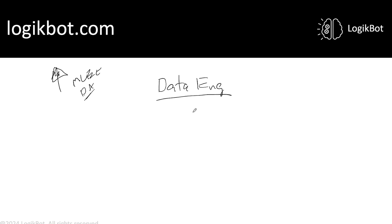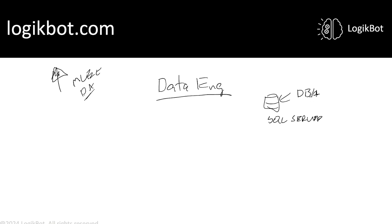So what is a data engineer? They work with data. They aren't DBAs. DBAs usually work with one particular database — the DBA, database administrator. Let's say this is a SQL Server. The DBA may only work with SQL Server; that may be the only skill he has. This is his vertical, that's all he does. A data engineer is more widespread.